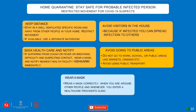Home quarantine protocols for a suspected or infected person: stay in a well-ventilated specific room away from other people in your home. Restrict movement — unless necessary do not leave your room. If available, use a separate bathroom. Avoid visitors in the house, as the infection can spread to others.